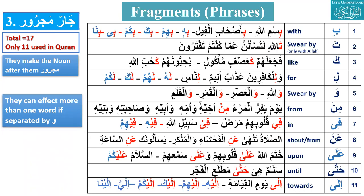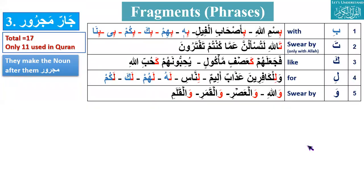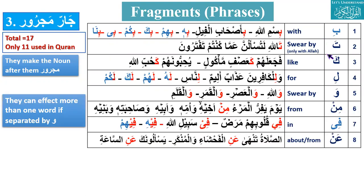There are three statuses of Ism: Marfu, Mansub, and Majroor. In singular: Muslimun, Musliman, Muslimin. Dual: Muslimani, Muslimaini. Plural: Muslimuna, Muslimina. Jar Majroor: Mudaf-Mudaf Ilai is a combination of two nouns; Sifa-Masoof is a combination of two nouns. Huruf-e-Jar are letters, and whatever noun comes after them becomes Majroor.